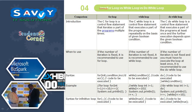For loop versus while loop versus do-while loop — comparing them. The C for loop is a control flow statement that iterates a part of the program multiple times on the basis of a given Boolean condition. The C while loop is a control flow statement that executes a part of the program repeatedly on the basis of a given Boolean condition. The C do-while loop executes a part of the program at least once, and further execution depends upon the given Boolean condition. When to use: if the number of iterations is fixed, use for loop; if not fixed, use while loop; if not fixed but must execute at least once, use do-while loop.